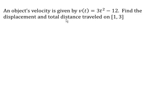An object's velocity is given by the function v(t) = 3t² - 12, probably measured in feet or meters per second. We want to find the displacement and total distance traveled on the interval [1, 3].